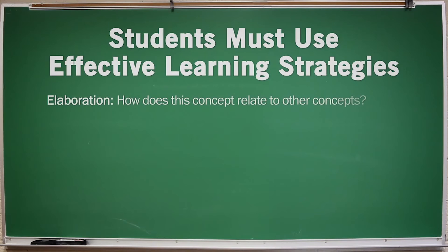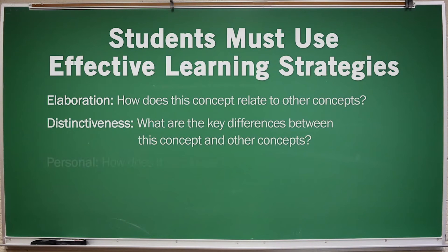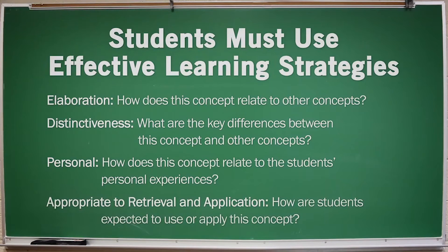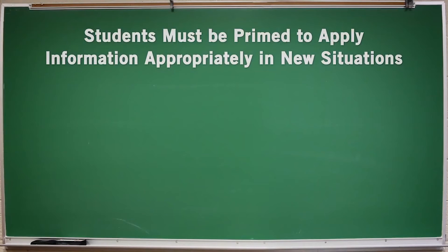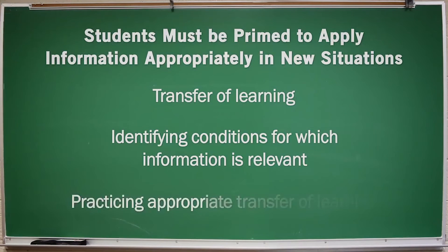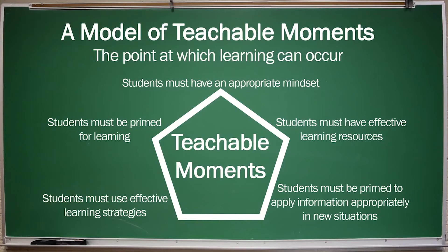Students must use effective learning strategies. Any gain in understanding will only be temporary if students do not use effective learning strategies that lead to long-term retention of the information. The learning strategies should go beyond simply recalling information — they should involve creating schematic knowledge that can direct future learning and reasoning. Students must be primed for transfer of their learning, that is, to use information appropriately and constructively in new situations. This has to do with learning to recognize the relevance and applicability of information in novel situations. Students should understand how experts use the knowledge being taught. We should judge the effectiveness of a teaching method by its ability to bring about teachable moments within the context of these factors.